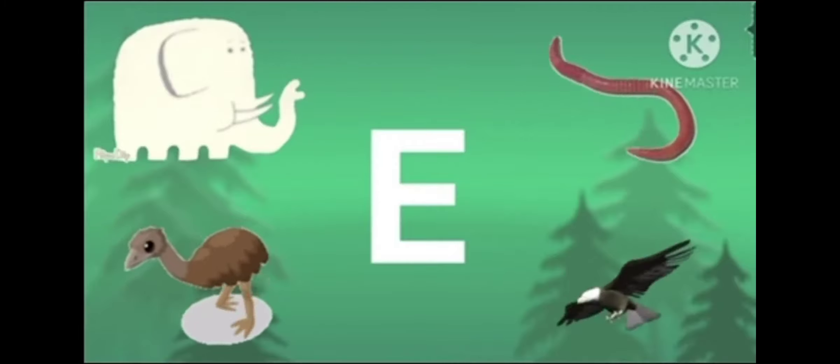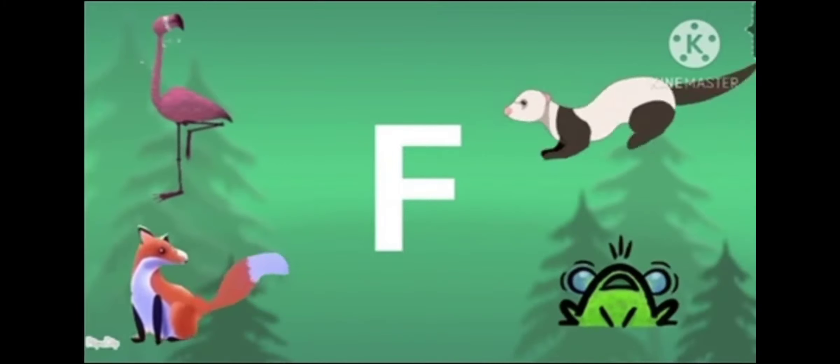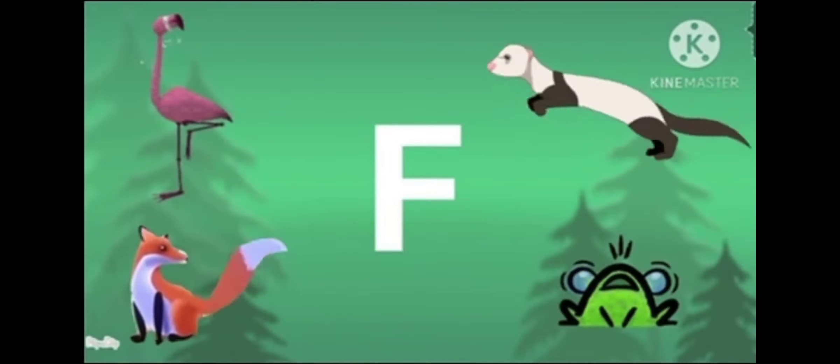E is for eagle, the powerful bird of prey. F is for flamingo, ferret and fox. F is for frog who likes sitting in the pond.